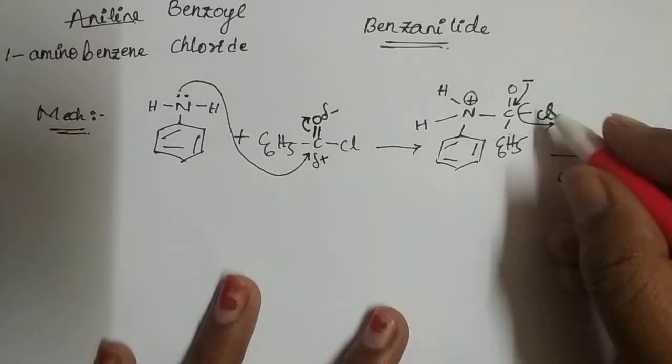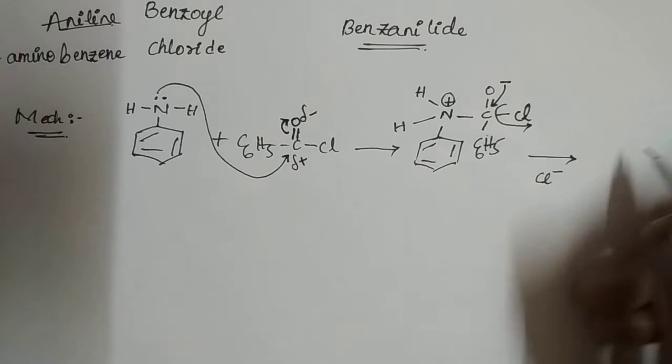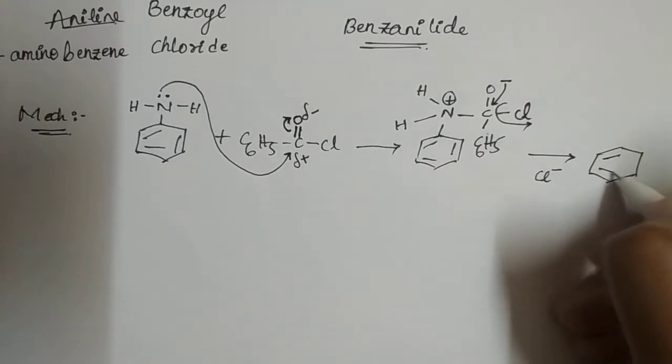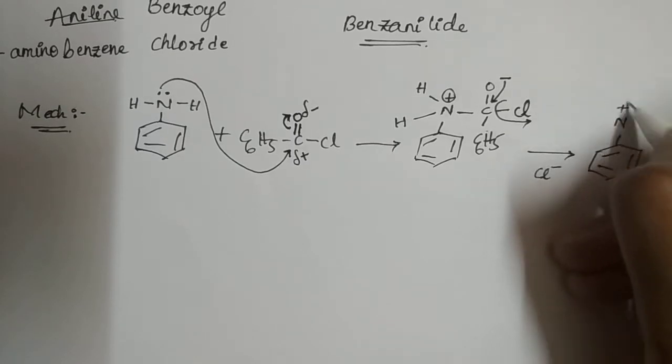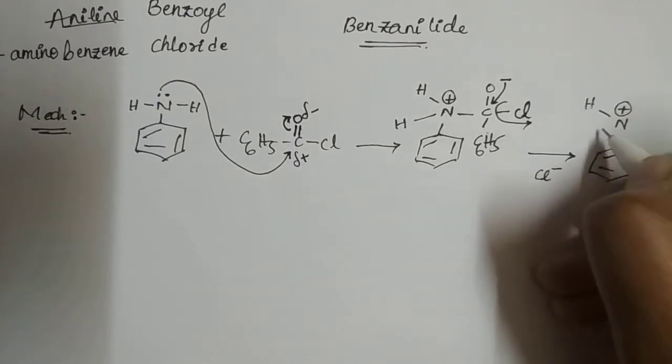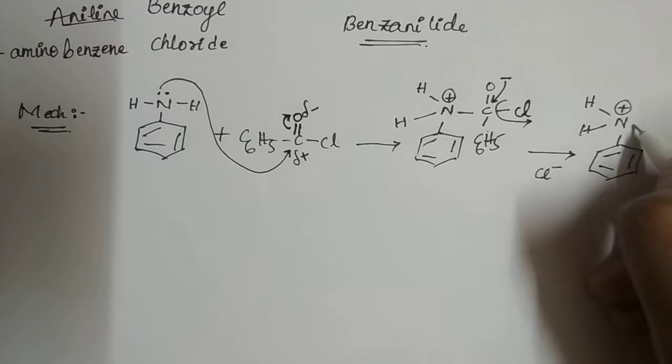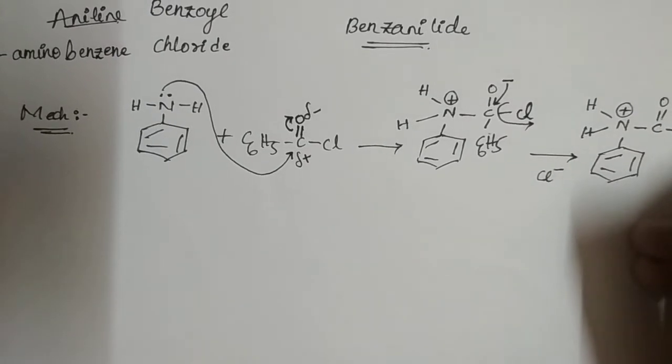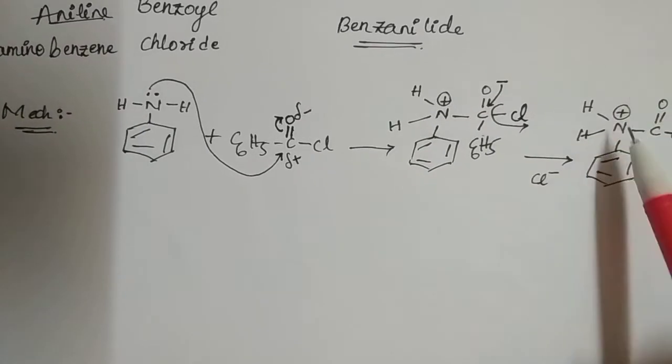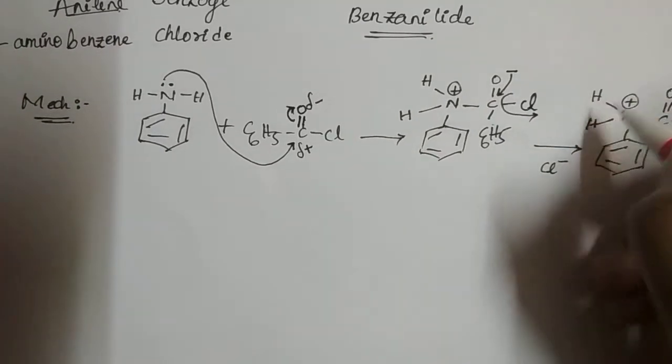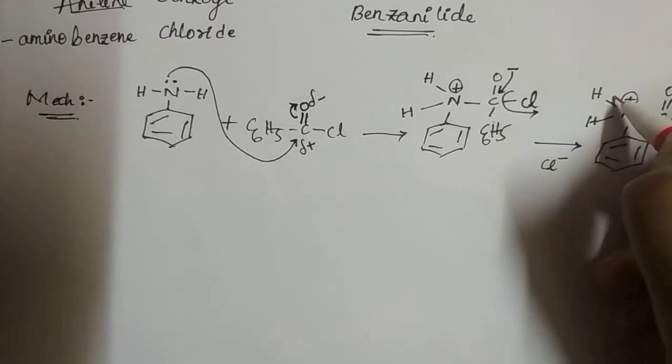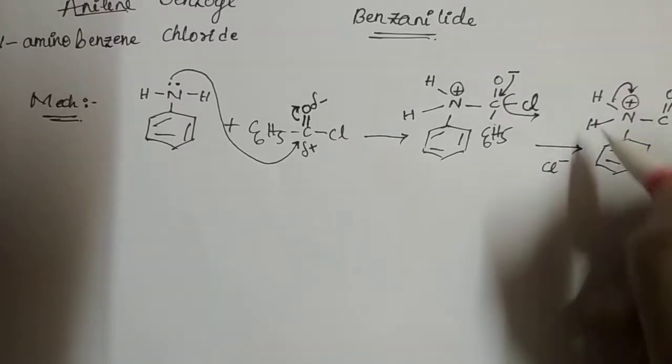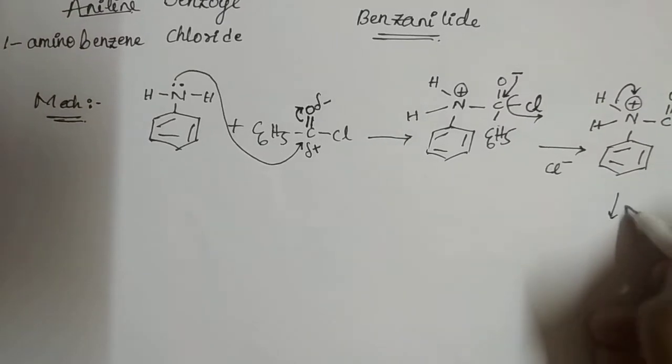Then we get as usual mechanism: C6H5-C double bond O-C6H5. There is neutralization of positive charge here. But here hydrogen gives its bonding electrons to the nitrogen and it removes as H plus ion.